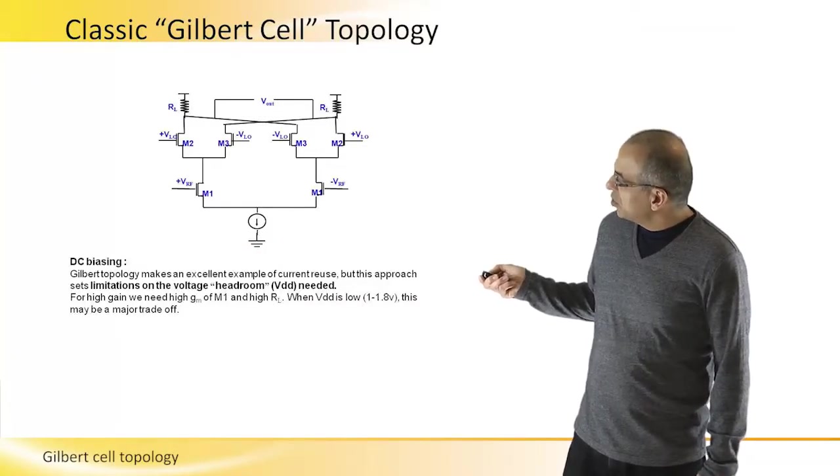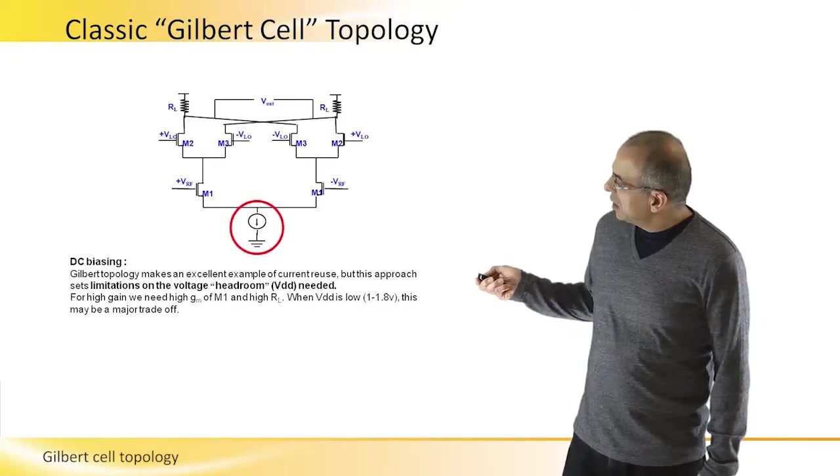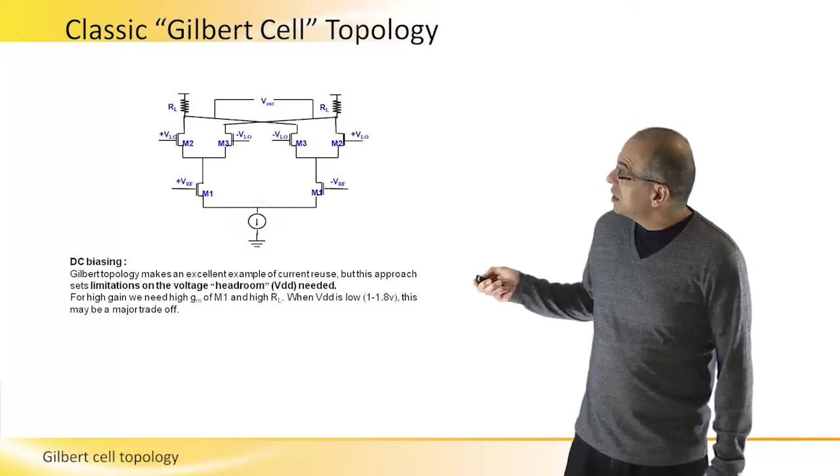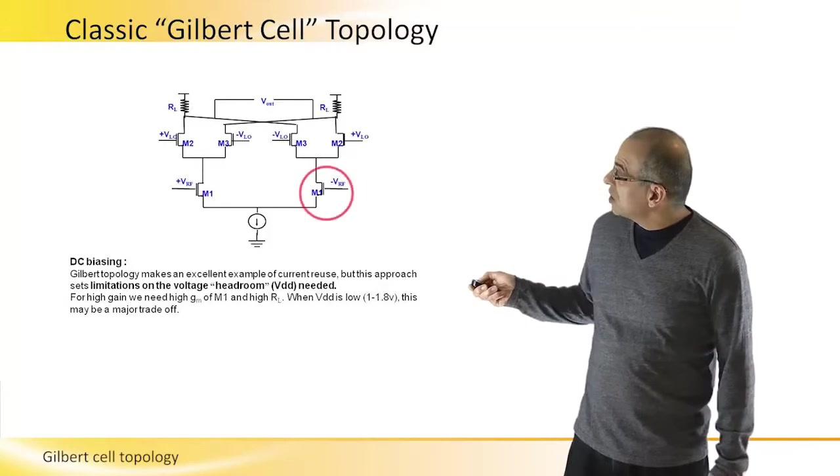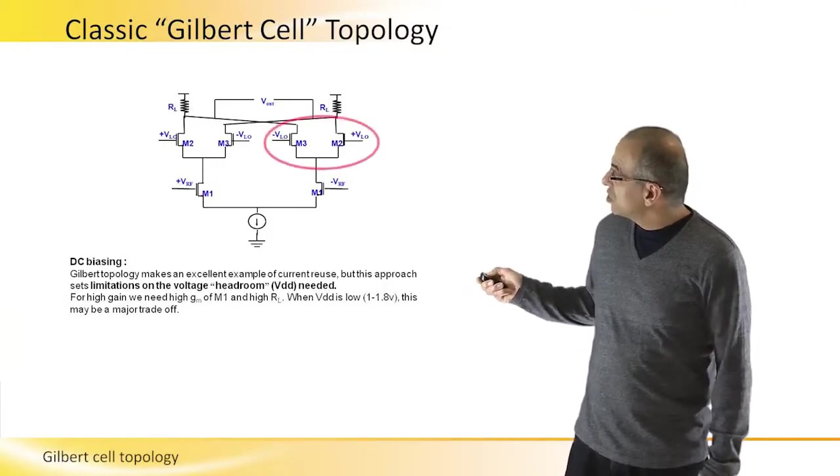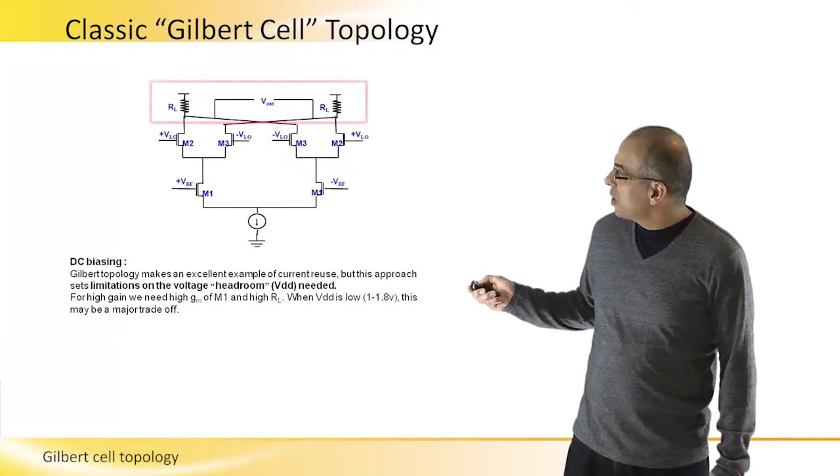We have a common source, we have a current source here which is usually one transistor but sometimes even more, and the transconductance amplifier transistors, and then we have the modulator transistors and the load, which may be resistive.